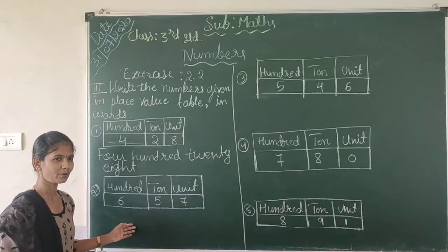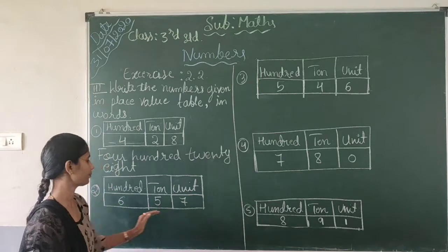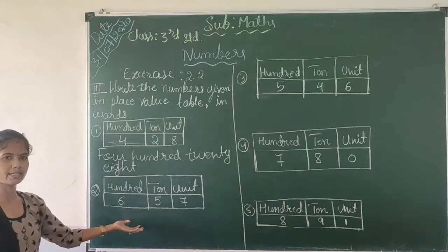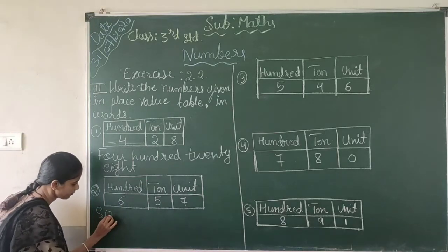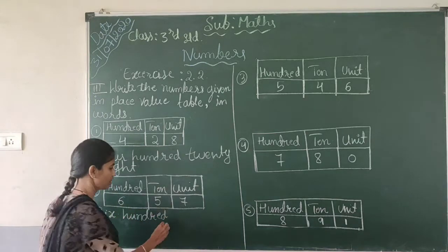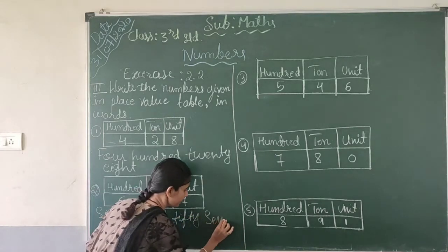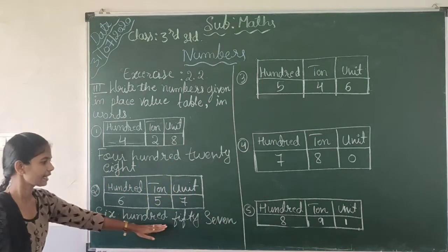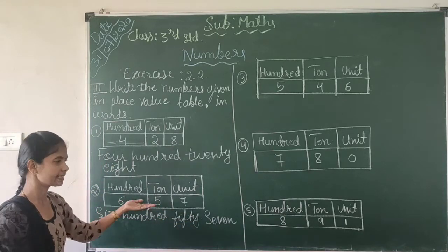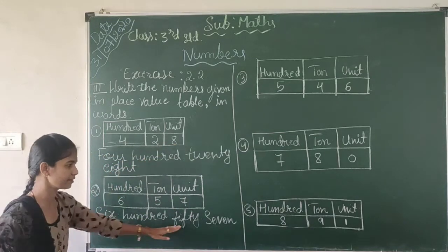Move to the second one. In the 100's place: 6. In the 10's place: 5. In the units place: 7. So the number is 657. Write in words: S-I-X hundred, fifty — F-I-F-T-Y — seven. Six hundred and fifty-seven. Similarly, 428 is four hundred and twenty-eight; 657 is six hundred and fifty-seven.